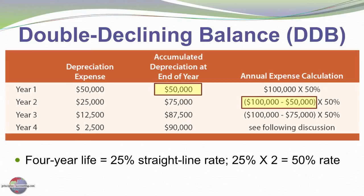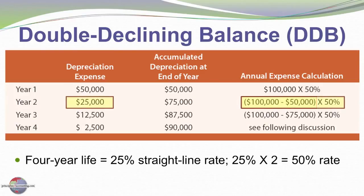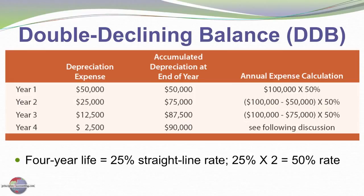That causes a reduction in book value to $50,000 — that is, cost of $100,000 minus $50,000 of accumulated depreciation gives us the remaining book value of $50,000. Multiplying that times twice the straight-line rate gives us year two's depreciation of $25,000.